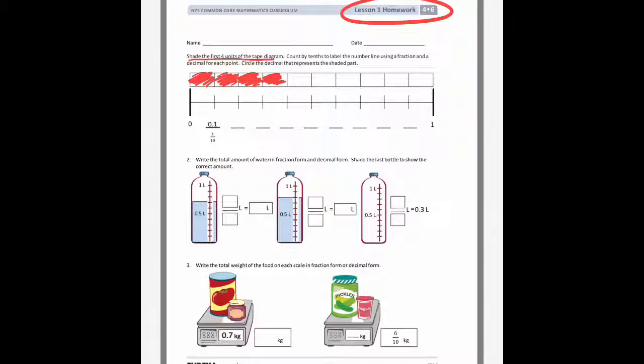Then it says, count by tenths to label the number line using a fraction and a decimal for each point. So they've already done the first one for us, they have 0.1 or 1 tenth, so the next one would be 2 tenths. We're at 0.2, 3 tenths, 0.3, 4 tenths,